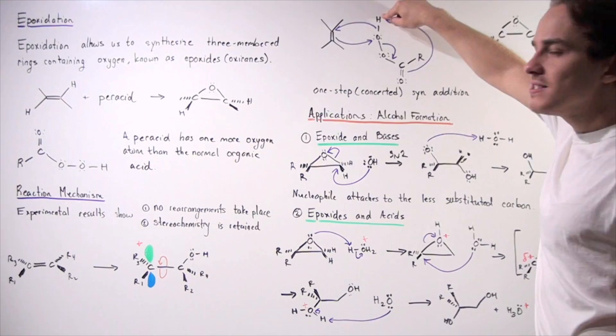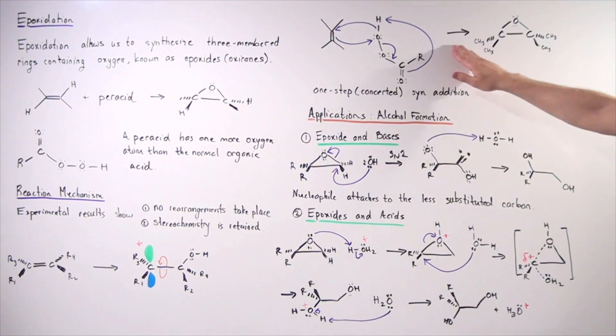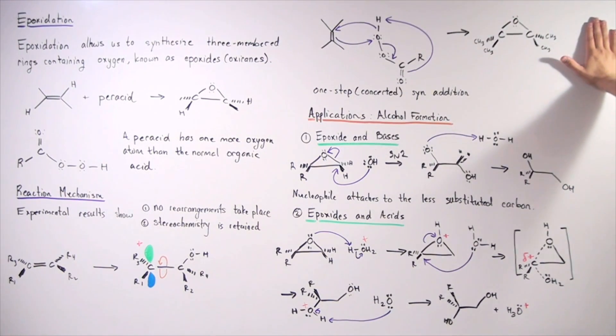And finally, this bond between this H atom and oxygen attacks this carbon and we form the following epoxide. So once again, this epoxide is a three-membered ring that contains an oxygen atom and two carbon atoms. Notice that this ring is neutral and that means we will be able to isolate this molecule under certain conditions.